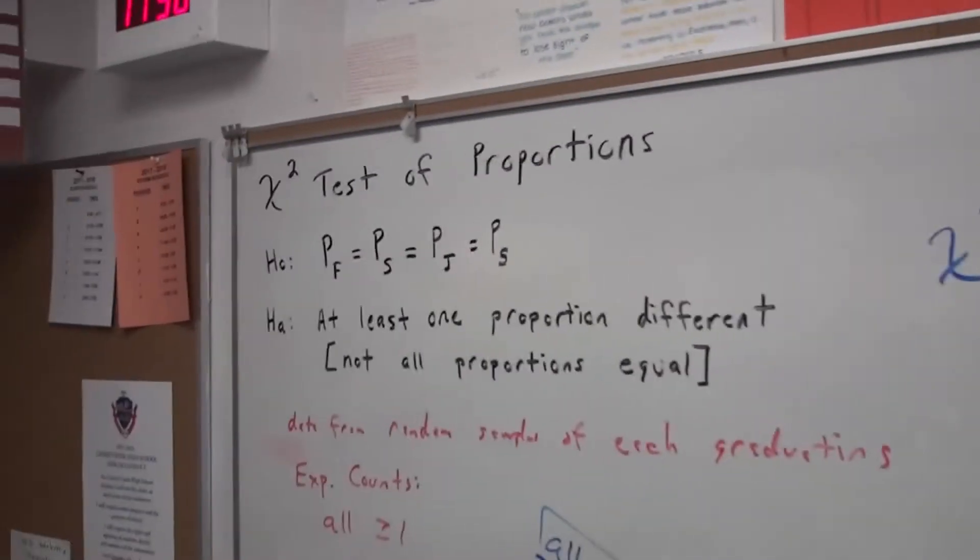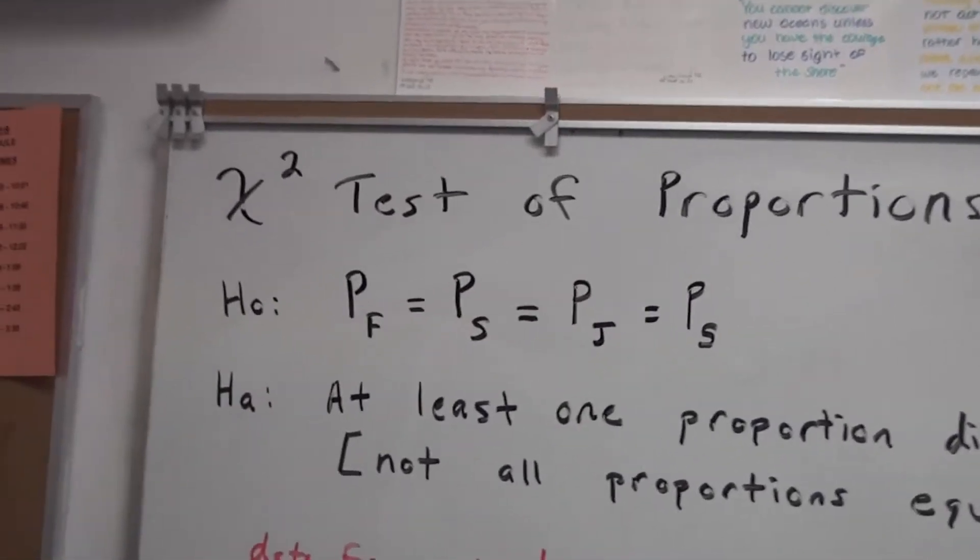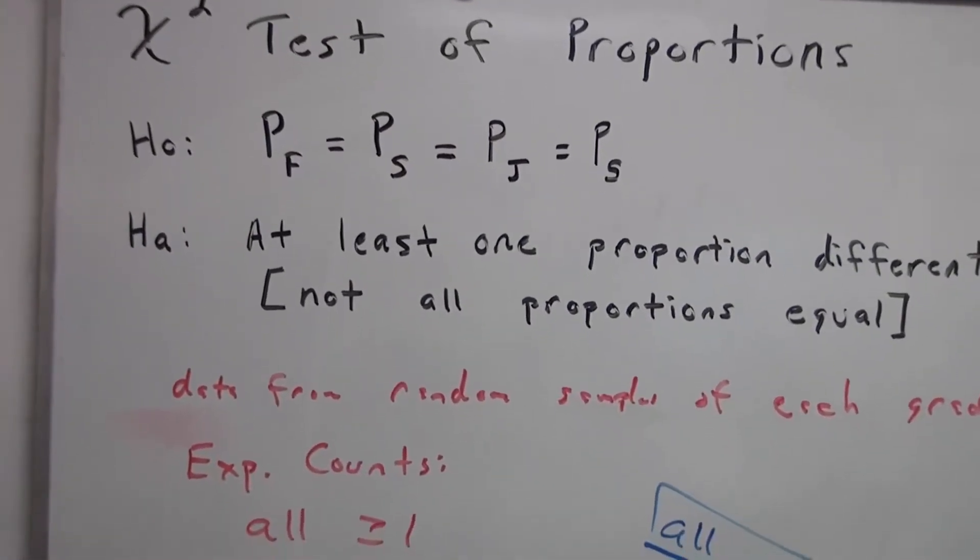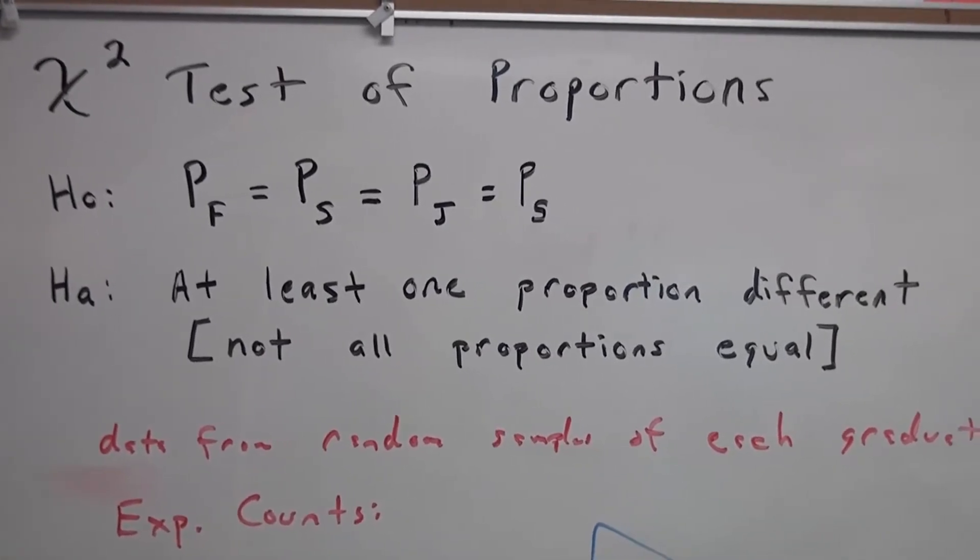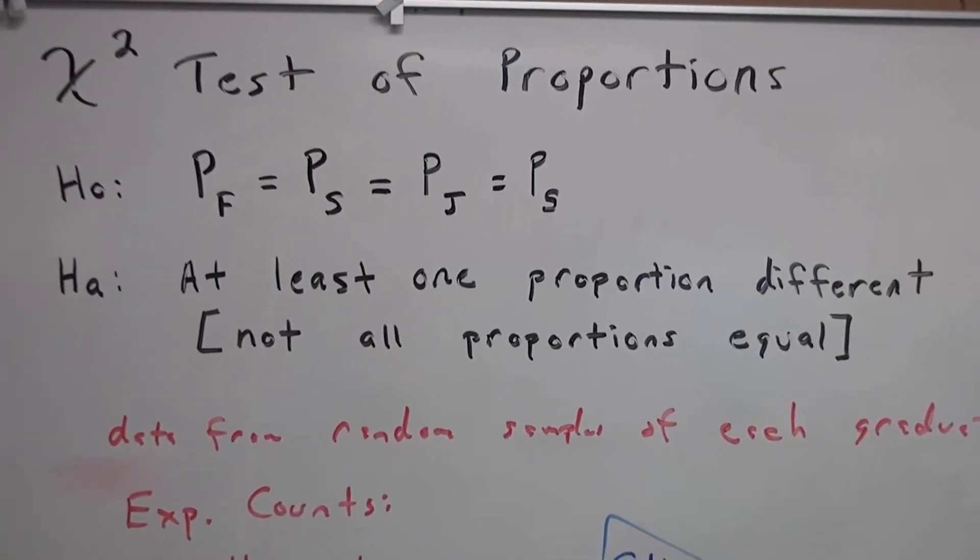The test we're going to run is the chi-squared test of proportions. The null hypothesis is that all the proportions are equal. The alternative has to be the complement, so we say at least one of the proportions is different, or not all the proportions are equal.